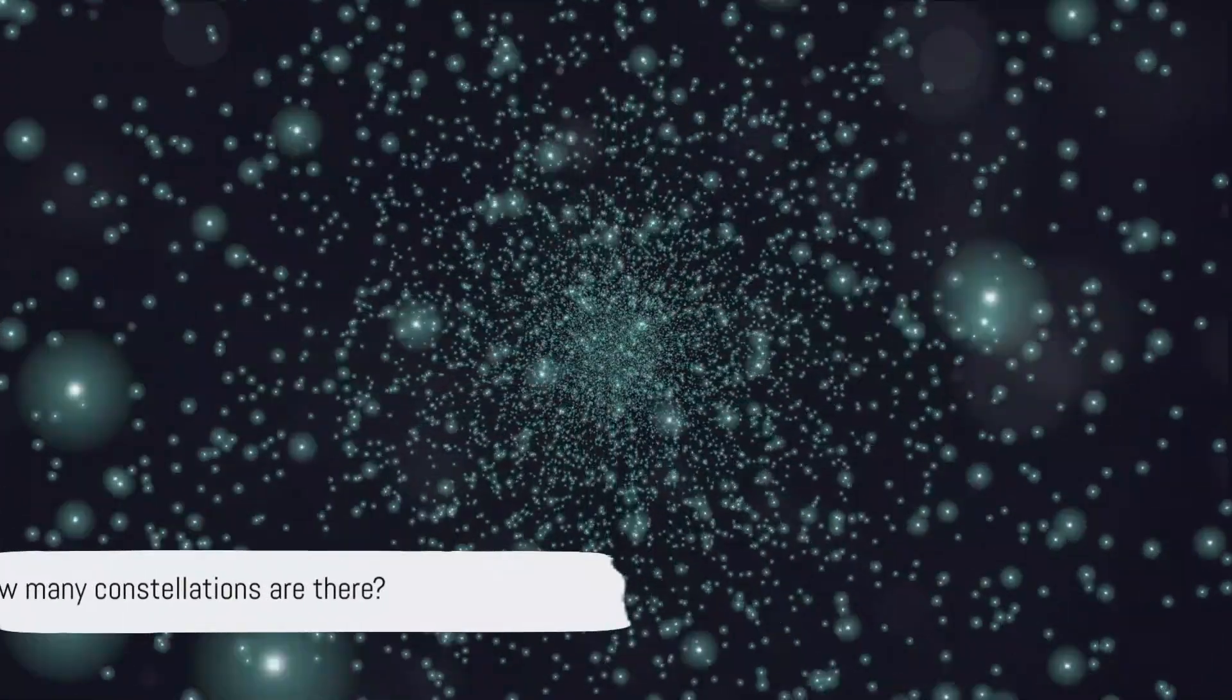So how many constellations do you think there are? Did you know there are 88 official constellations? Yes, 88. You might think that's a lot, but the night sky is a big place.